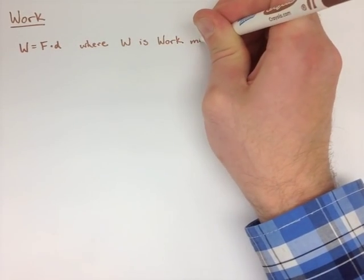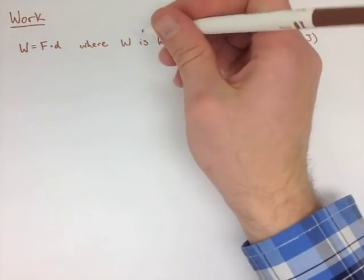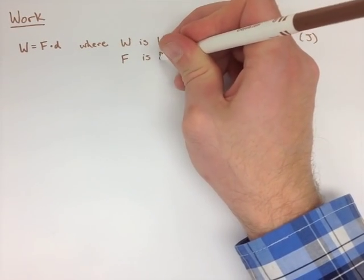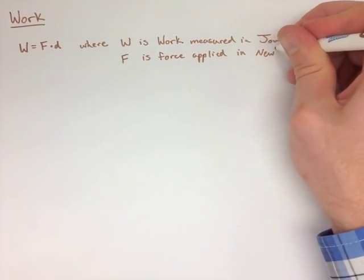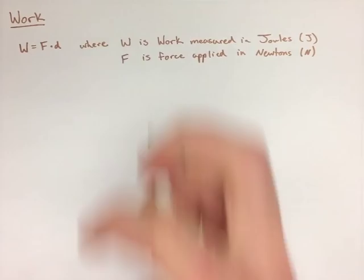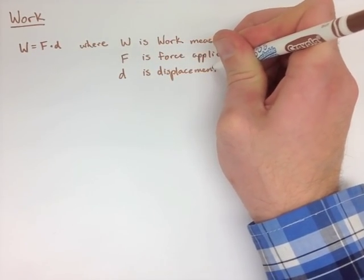Well, work is force times displacement, where W is our work measured in joules. We talked about that yesterday. Force is always going to be measured in newtons—that's F, our applied force or net force a lot of the time. And d is going to be our displacement, measured in meters.